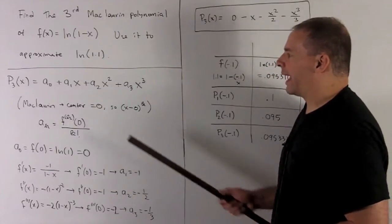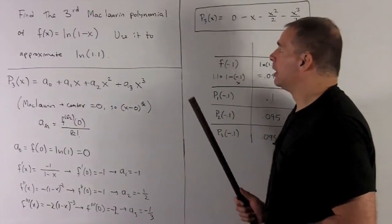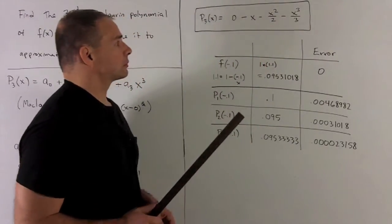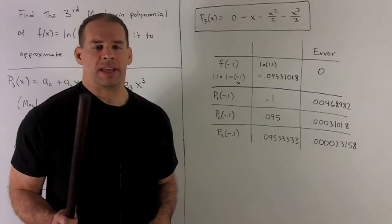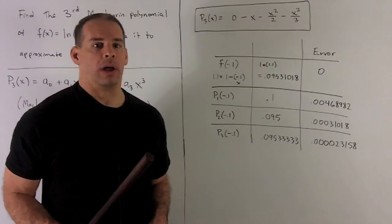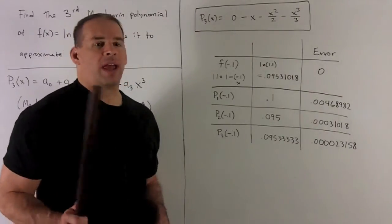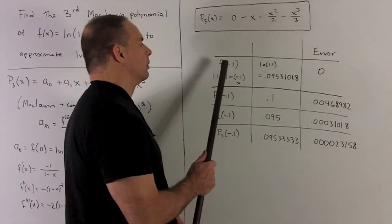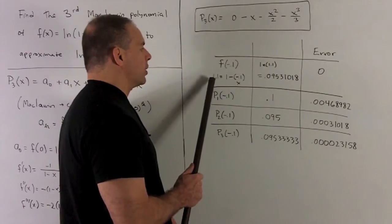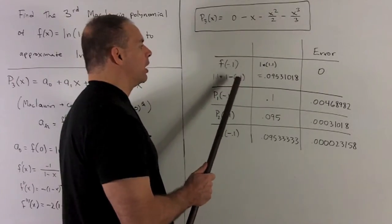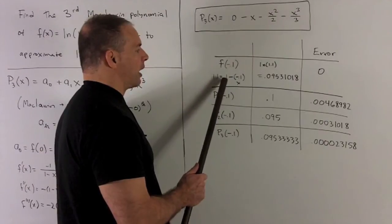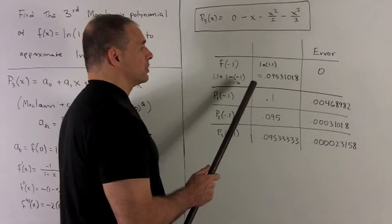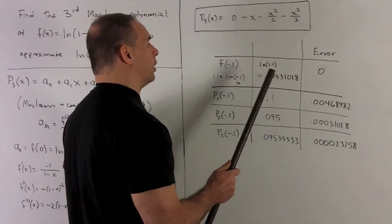So now I can just load my a's up into our polynomial here, and that's going to give us this polynomial. Now we want to use this polynomial to estimate natural log of 1.1. We'll note, natural log of 1.1 is going to be the function f evaluated at minus 0.1. That's because 1.1 is 1 minus minus 0.1, and we're looking at the function natural log of 1 minus x. So natural log of 1.1 is going to be 0.09531018.